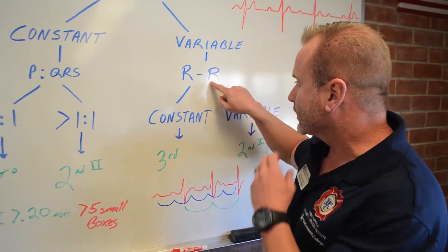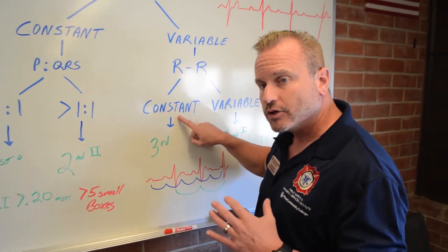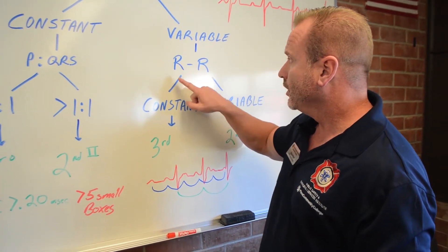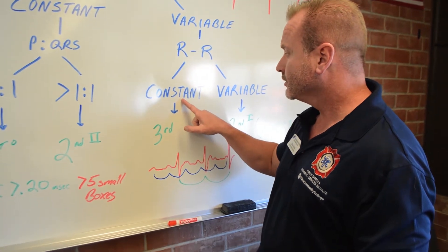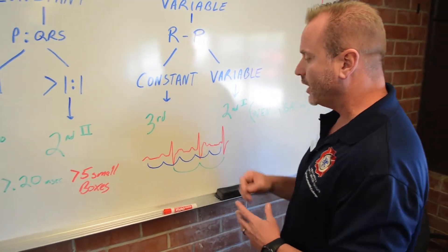Well, with a third degree, it should be variable. Our R to R complex is constant. This is what makes deciphering a third degree so fundamentally easy. And when we go over it, you'll see it. So my PR is variable. My RR is constant. I have a third degree AV block.